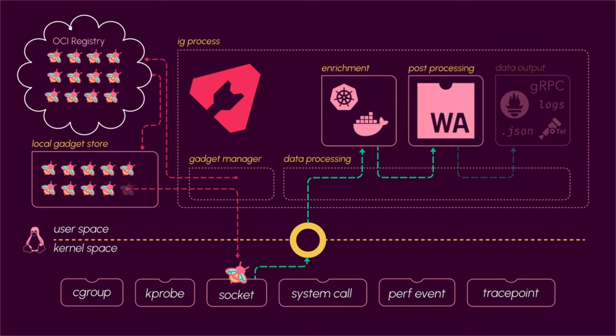We're also working on systemd support so that even when you're not running inside of a container infrastructure, you can still see what service it's associated with. The next step is an optional post-processing step. A simple example is our DNS gadget — the DNS information is formatted in a way that's not easy for BPF to process because it needs some loops, and BPF is a little restrictive for what it does inside the kernel. So we actually have a WASM module that simply formats the string the way we want.